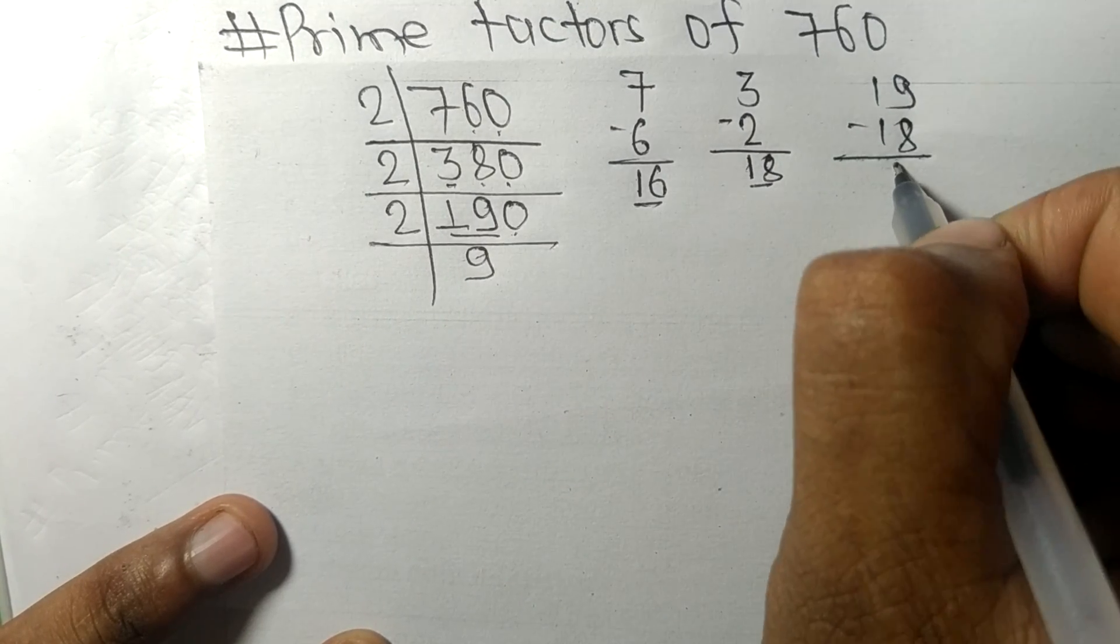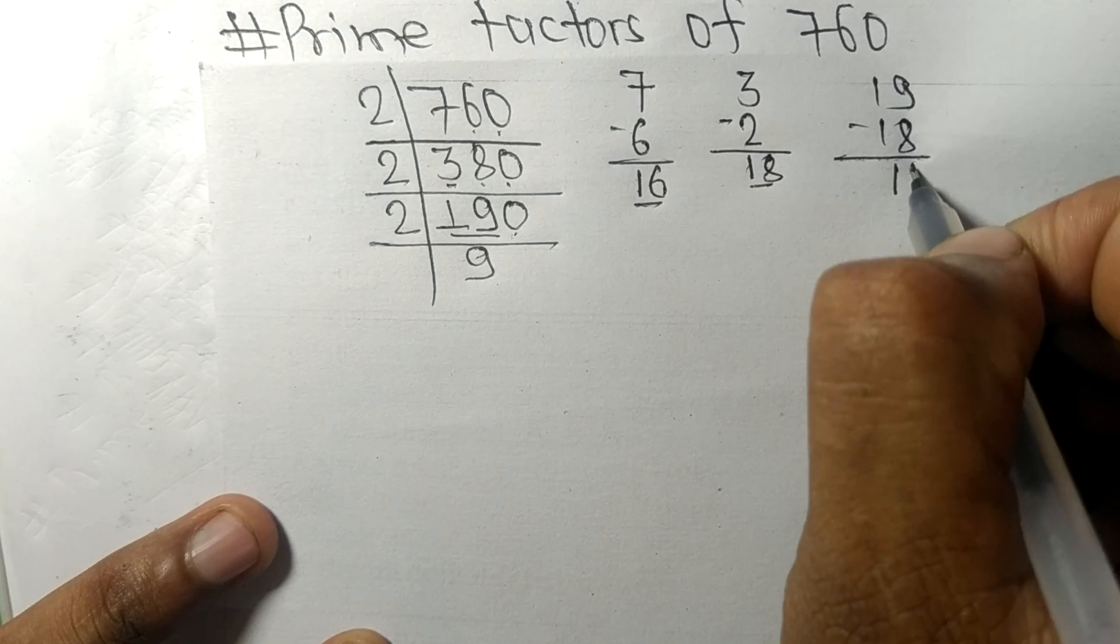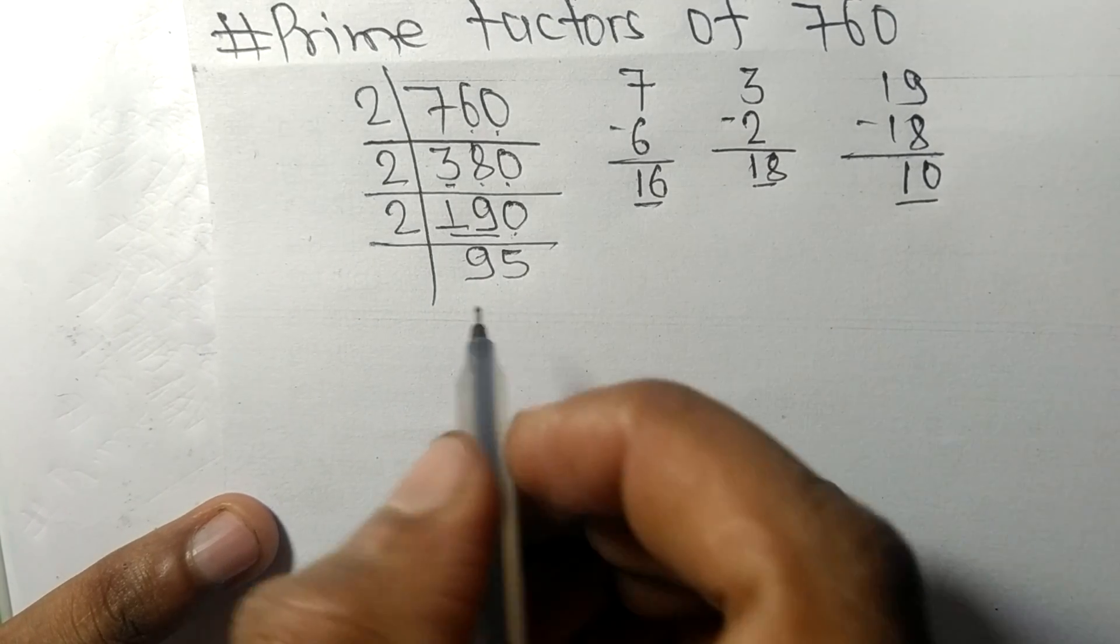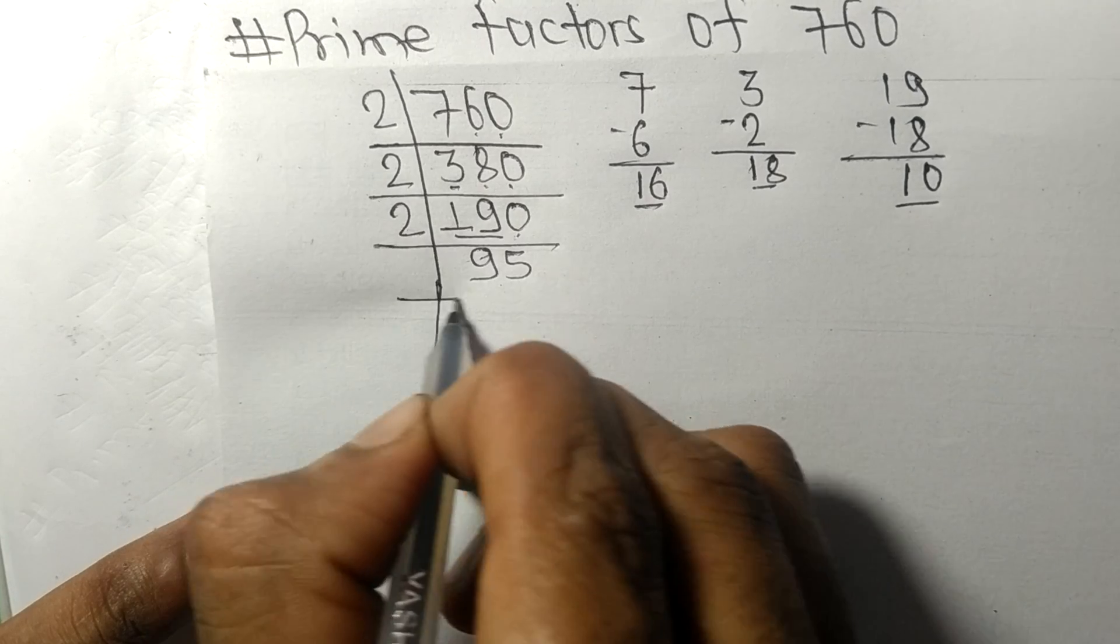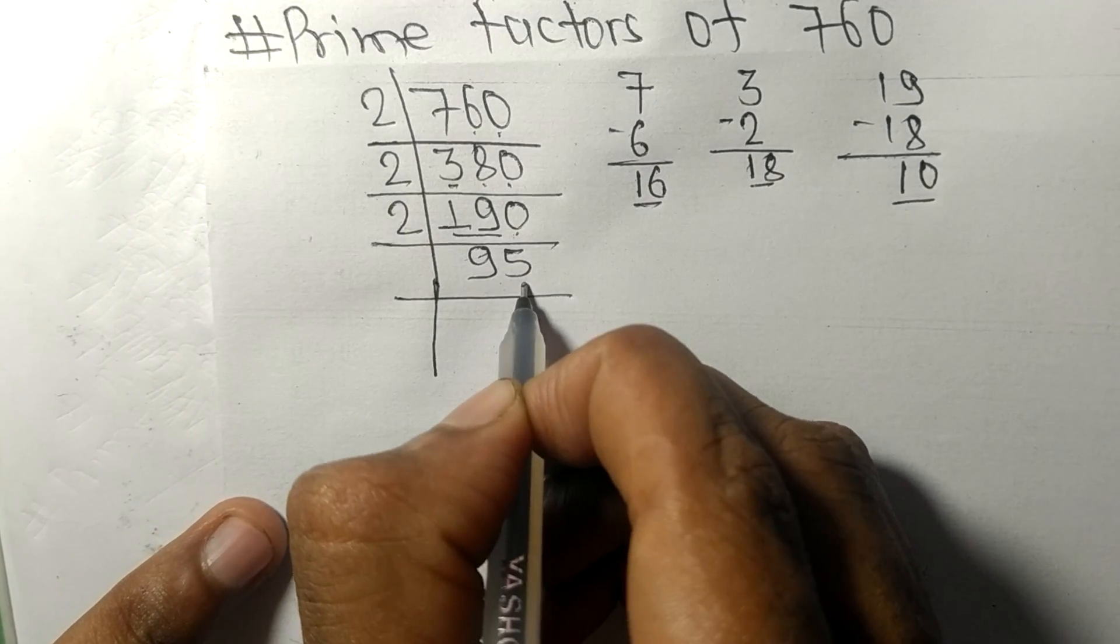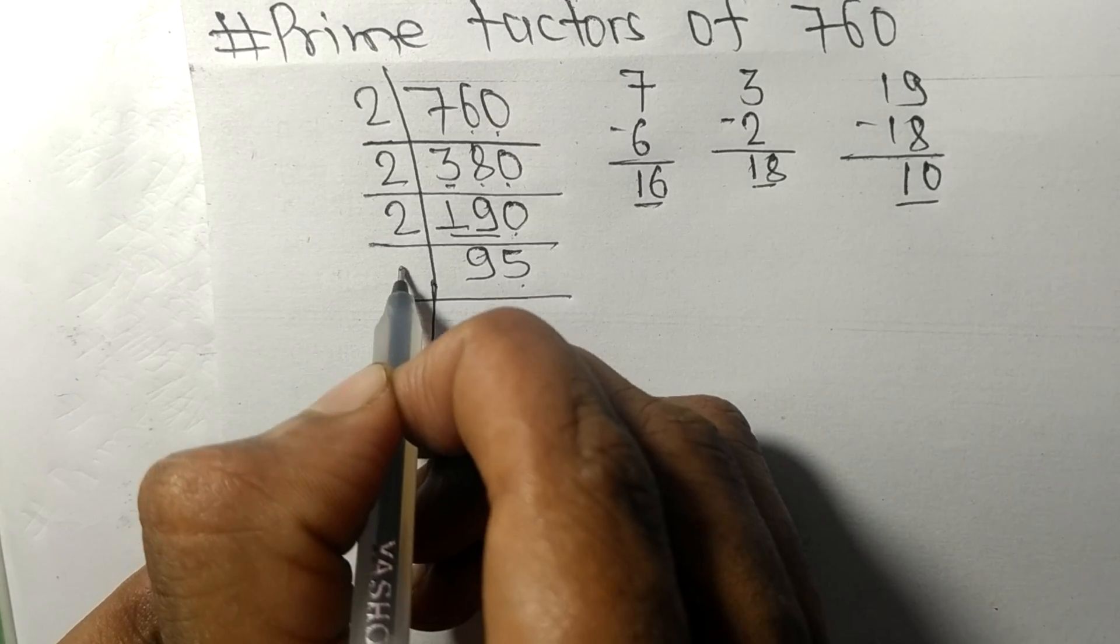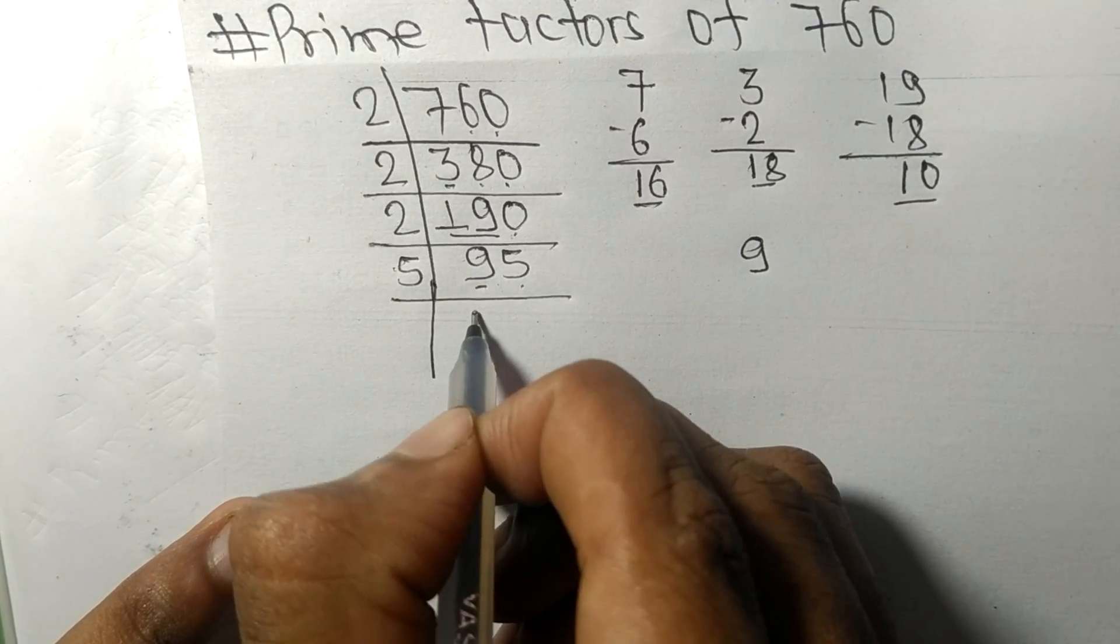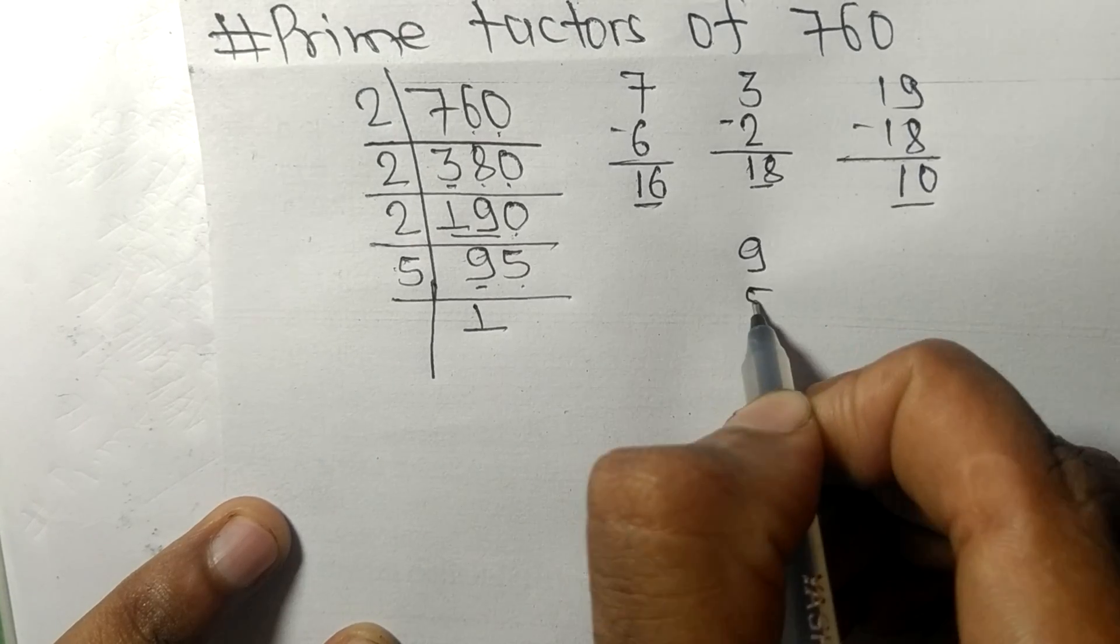Now we got 95, and it has 5 at the last, so it is divisible by 5. First we have 9, so 5 times 1 means 5, remainder 4.